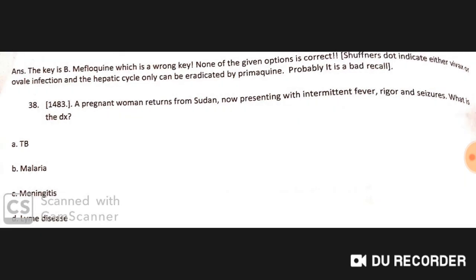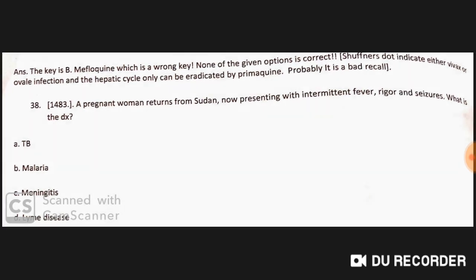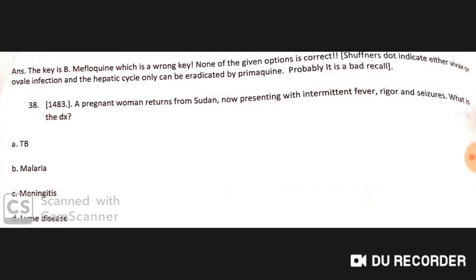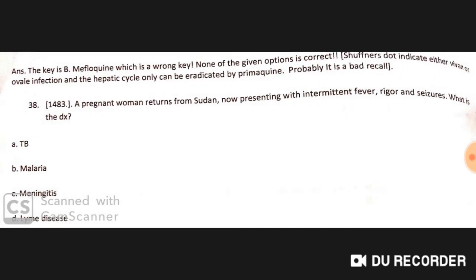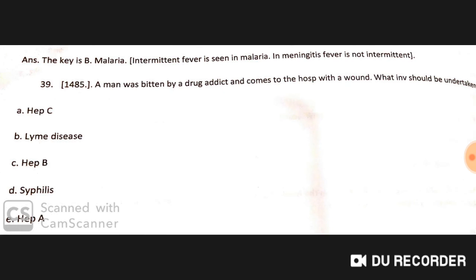A pregnant woman returns from Sudan presenting with intermittent fever, rigors, and seizures. This is a case of malaria. Intermittent fever helps distinguish it from meningitis, which does not cause intermittent fever.